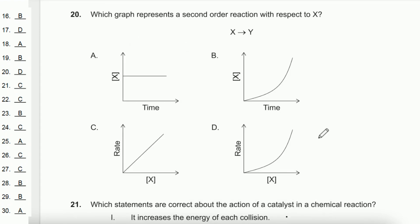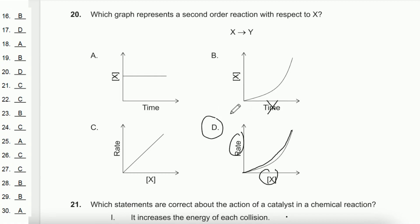Question 20: Which graph represents a second-order reaction with respect to X? For a second-order reaction, the graph of rate versus concentration is quadratic — not linear versus time. The quadratic curve matches option D — the answer is D. If you guys like this video, please subscribe, comment, like, and share. For questions 21 to 40, please watch the second part of this video. I hope this video helped you guys a lot — see ya!